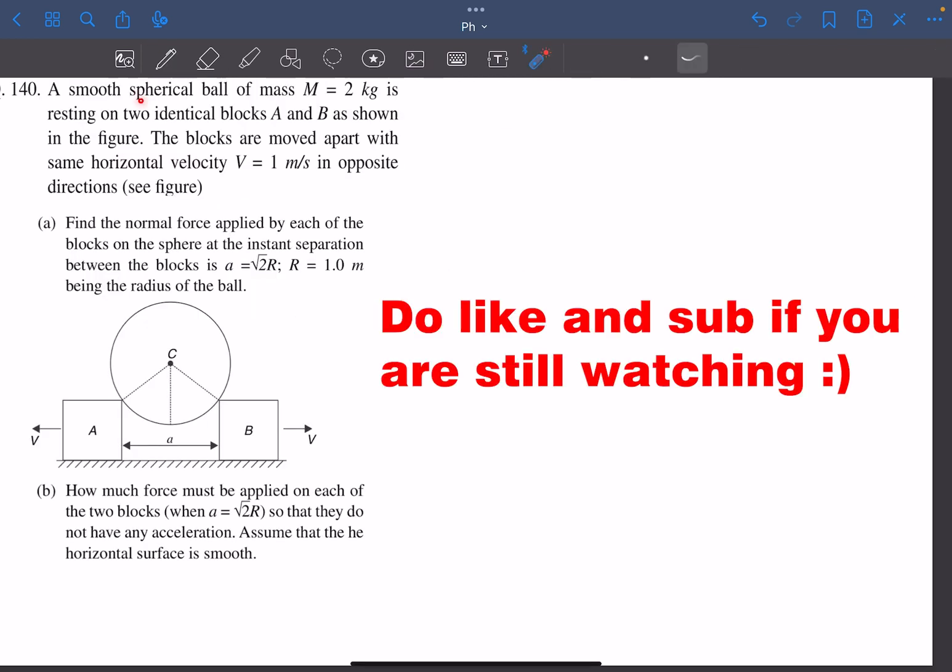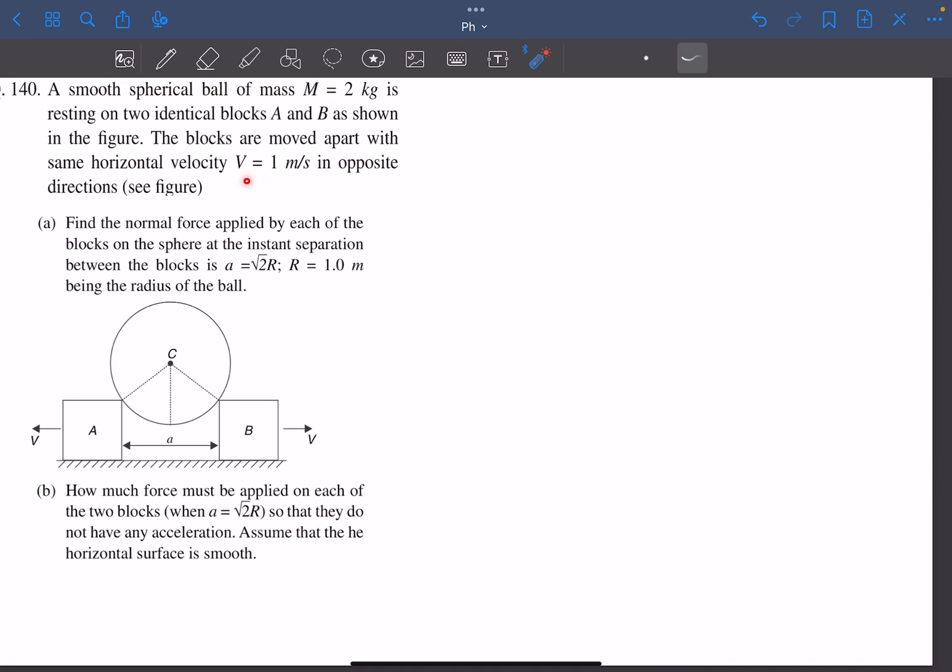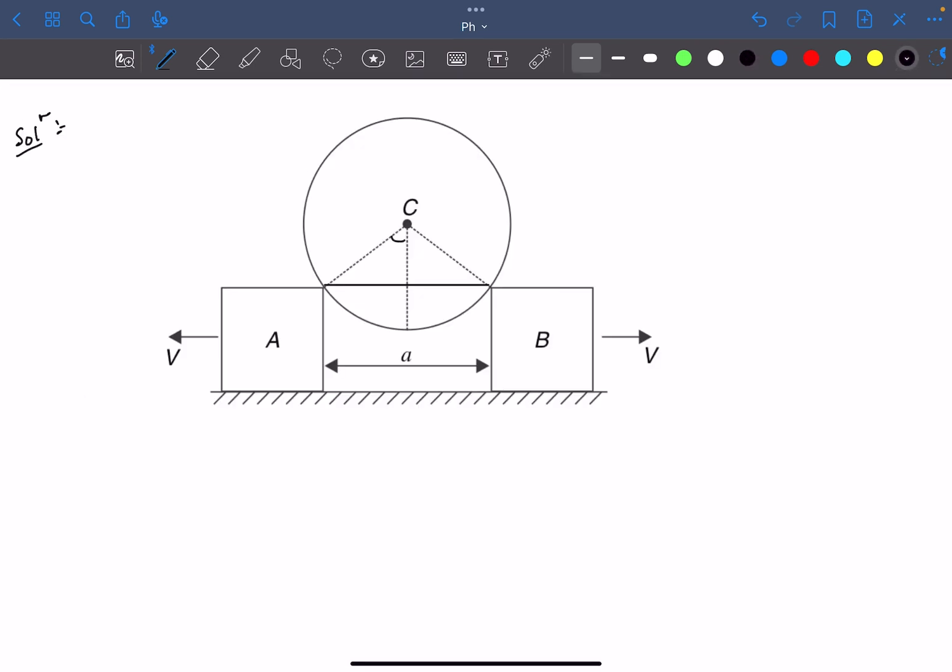Moving on to the next problem, we have a smooth spherical ball of mass 2 kg resting on two identical blocks A and B. The blocks are moved apart with the same horizontal velocity of 1 meter per second in opposite directions. We have to find the normal force applied by each block on the sphere at the instant when the separation between the blocks is root 2r. At some general time, let's say this angle is theta. We can say A equals 2r sin theta because the situation is symmetric. By symmetry we can clearly see the sphere is going to come down, and the sphere's velocity will be in the downward direction.